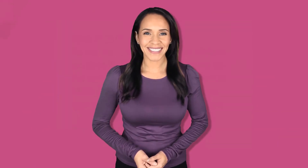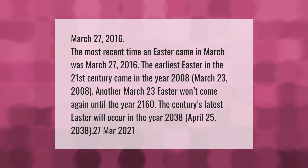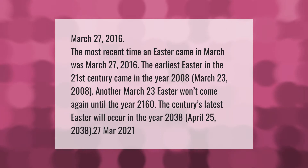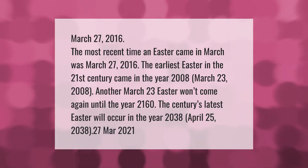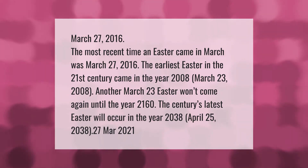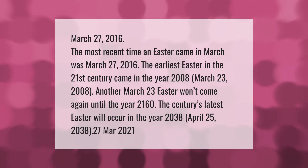The most recent time Easter came in March was March 27, 2016. The earliest Easter in the 21st century came on March 23, 2008. Another March 23 Easter won't come again until the year 2160. The century's latest Easter will occur on April 25, 2038.